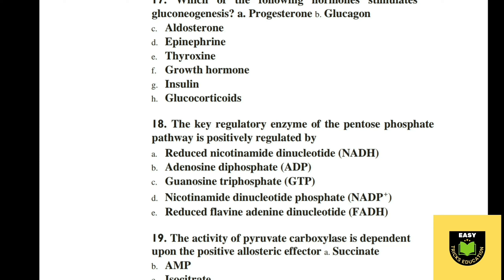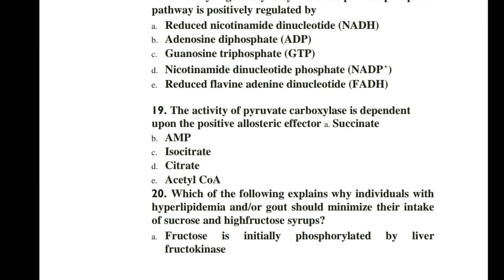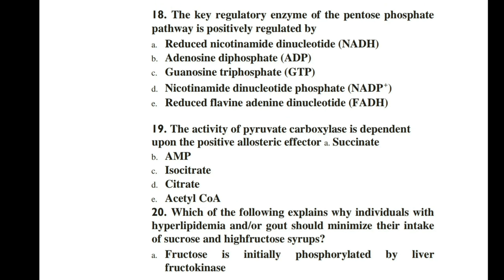Question 17. Which of the following hormones stimulates gluconeogenesis? A progesterone, B glucagon, C aldosterone, D epinephrine, E thyroxine, F growth hormone, G insulin, H glucocorticoid. The correct option is B, glucagon.